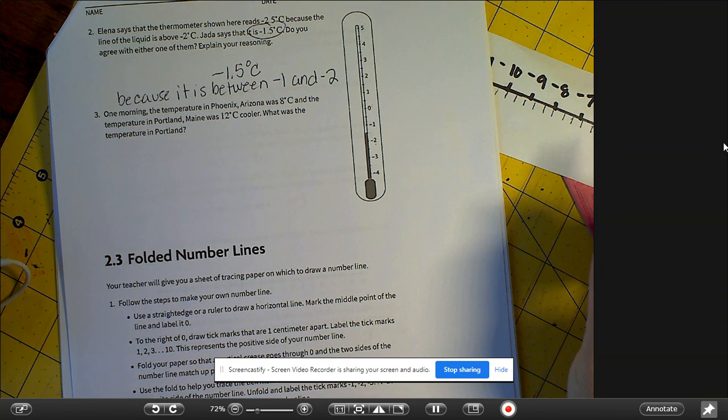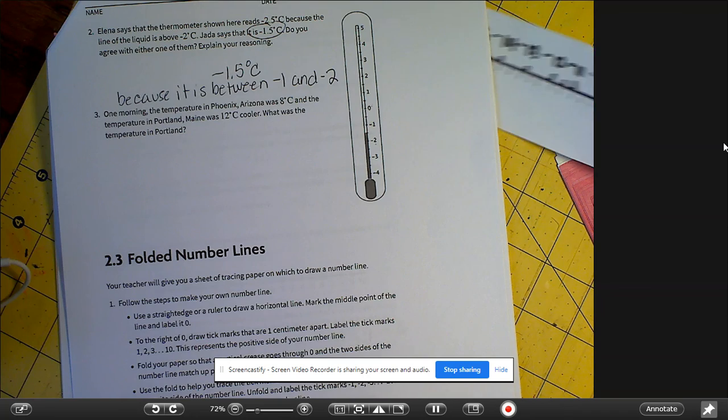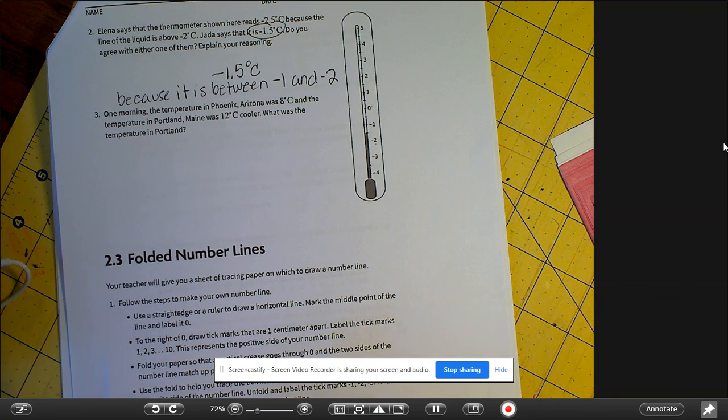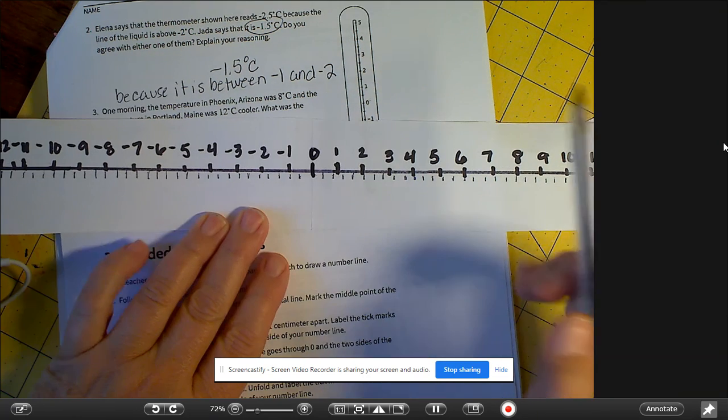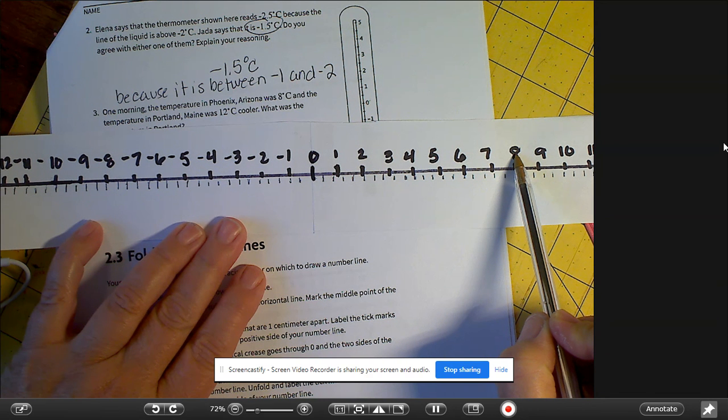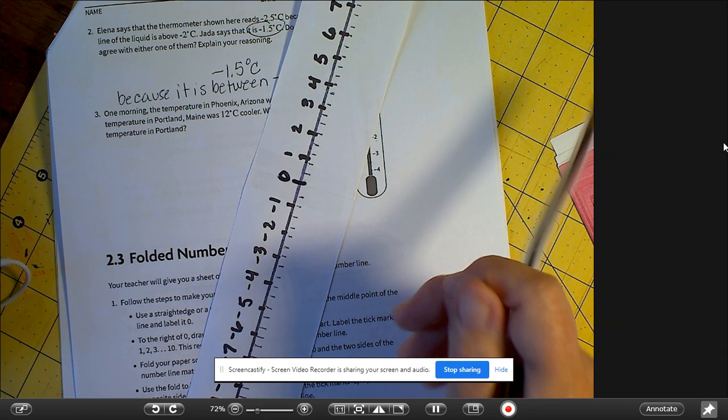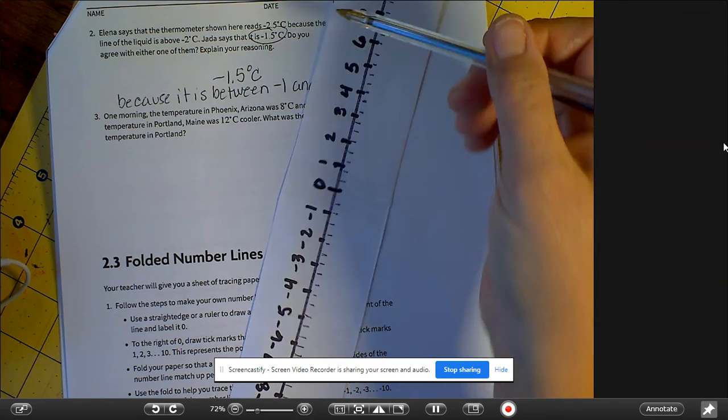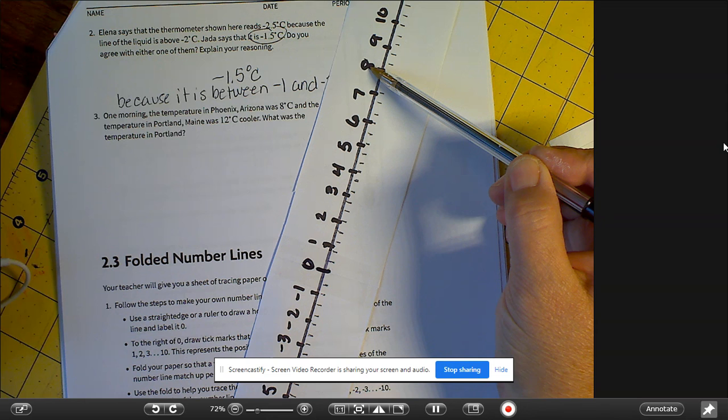Number three, one morning the temperature in Phoenix, Arizona was 8 and the temperature in Portland, Maine was 12 degrees cooler. What was the temperature in Portland? So I've made this number line. If it starts at 8 and it's going to drop 12 degrees, remember you could do it this way, right? Because temperature goes up and down like this, like a thermometer.